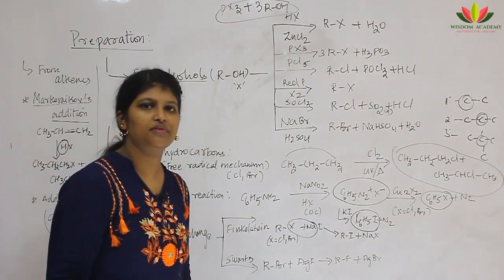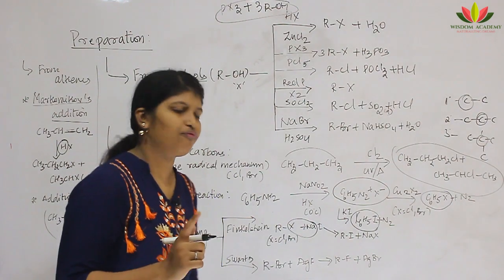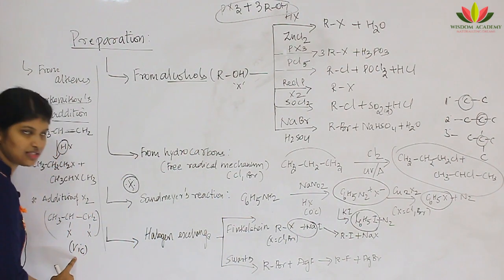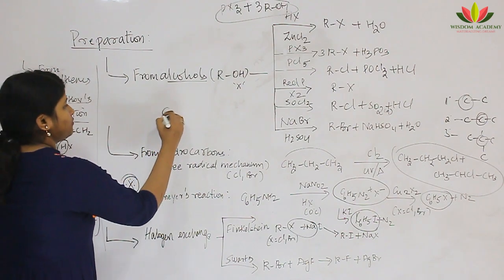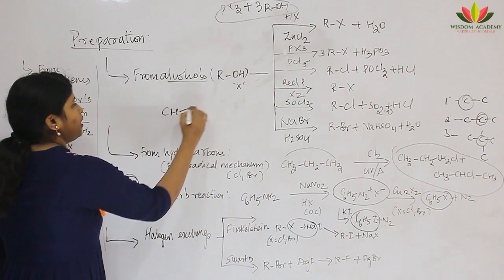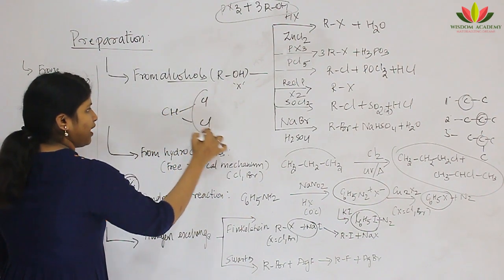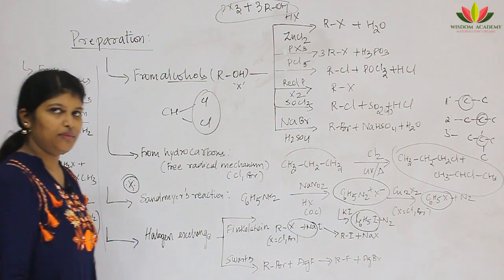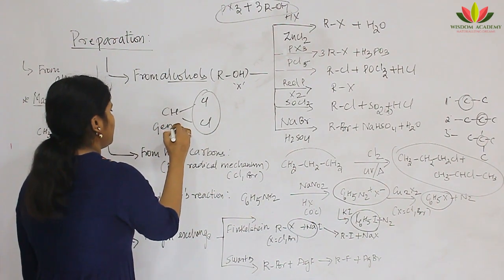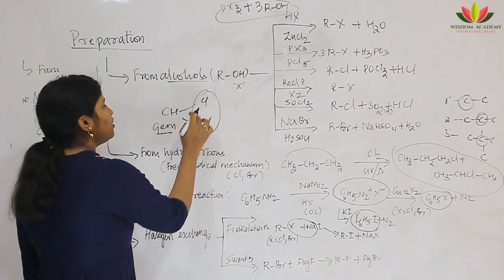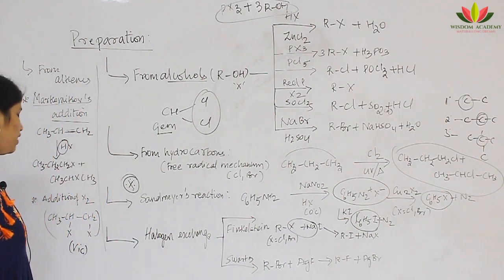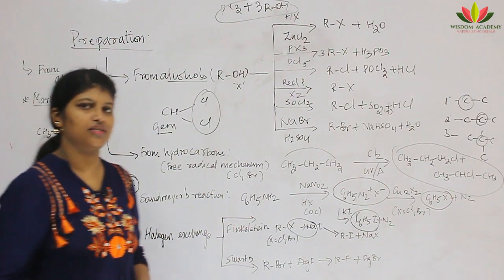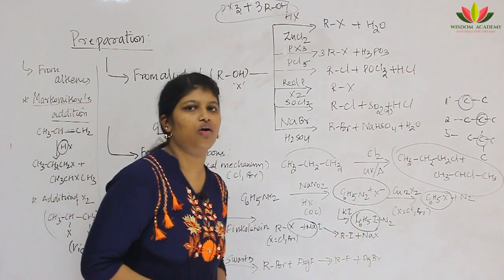We have two types: vicinal and geminal. If two adjacent carbons each have a halogen, the compound is vicinal. If the same carbon has two halogens, the compound is geminal.